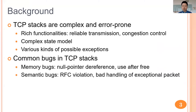Though TCP stacks are critical, they are complex and error-prone, as the TCP stack has rich functionalities such as reliable transmission and congestion control, complex data model, and various kinds of possible exceptions to handle. Thus, developers may unintentionally make mistakes when implementing TCP stacks, introducing bugs that can cause serious problems, including memory bugs such as null-pointer dereference and use-after-free, and semantic bugs such as RFC violation and bad handling of exceptional packets.